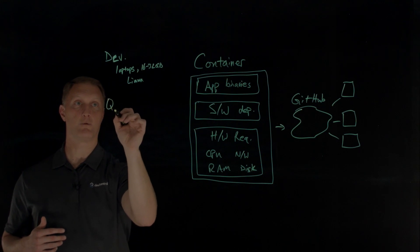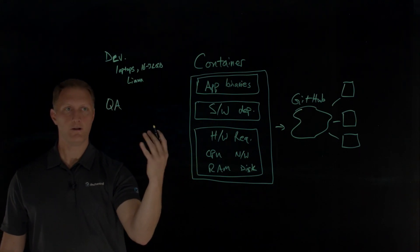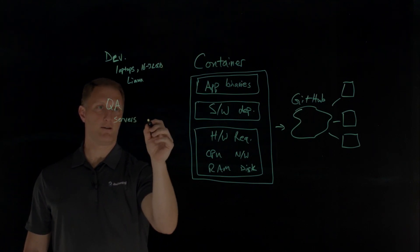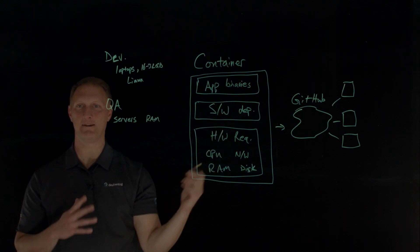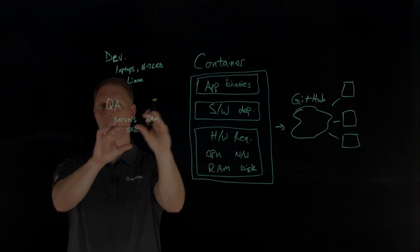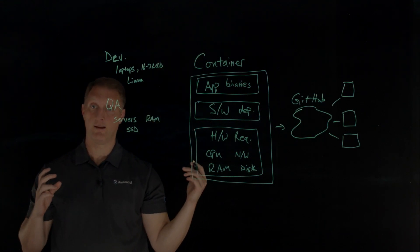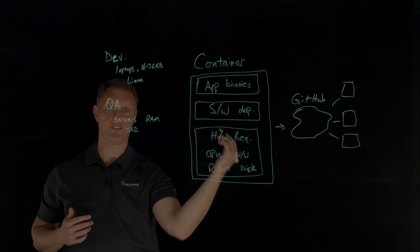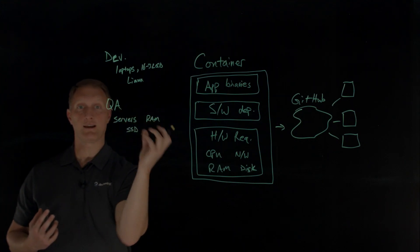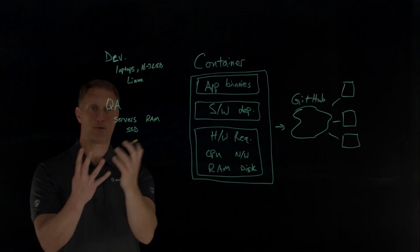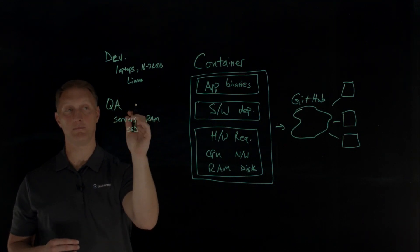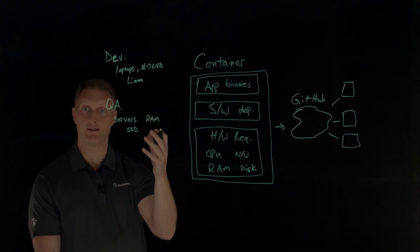Then they kick it over to the QA team — the quality assurance team — who also does awesome work. They have a variety of different servers with all kinds of different memory configurations, and they may have SSD drives in addition to spinning hard drives. The hardware here is maybe much different than what the development team has. But because each container defines the hardware requirements — the resources required for each service to run — the server carves out those resources when needed, and the containerized application runs exactly the same in the QA environment as it did on the development hardware.